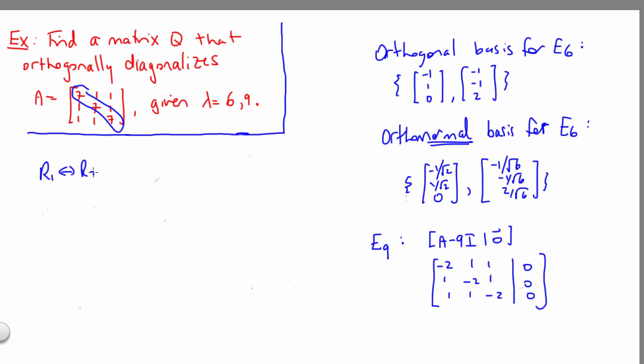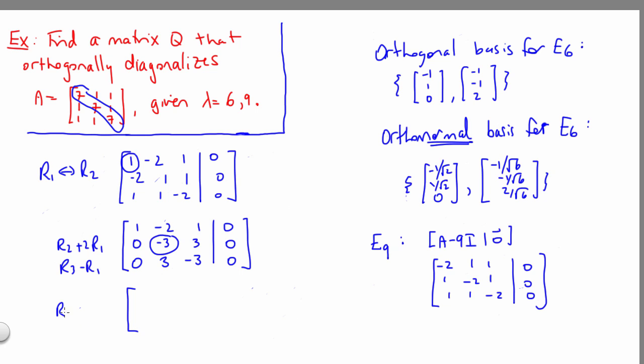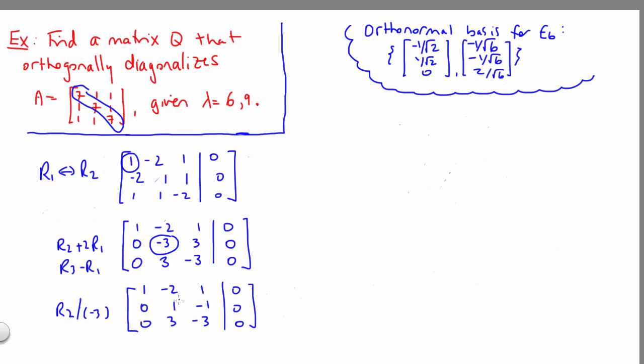Let's swap the top two rows to get a 1 in the upper left. Then we can take row 2 plus 2 times our pivot row, and row 3 minus our pivot row. Next, we'll move down and to the right. This negative 3 will be our new pivot. So let's take row 2 divided by negative 3. So we can now use our pivot here to clean up the rest of that second column. Let's do row 1 plus 2 row 2, and row 3 minus 3 times row 2. So that will give us 1, 0, and negative 1.